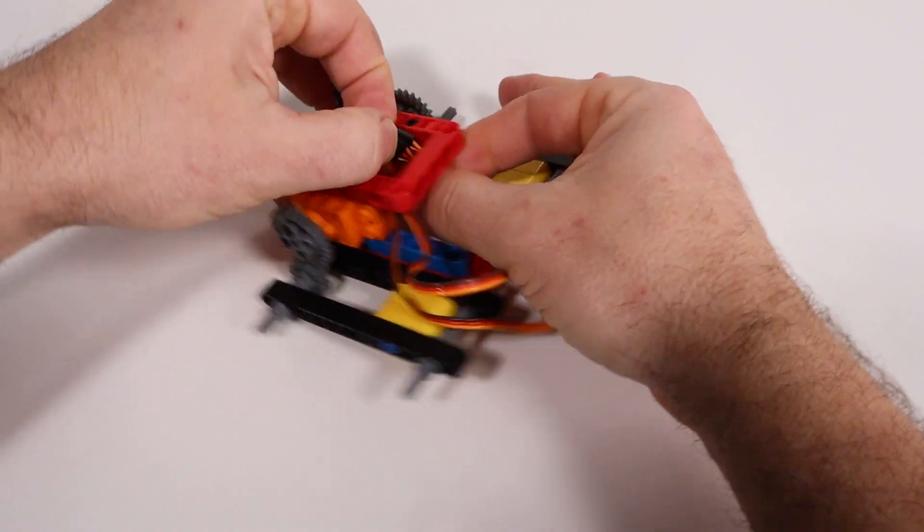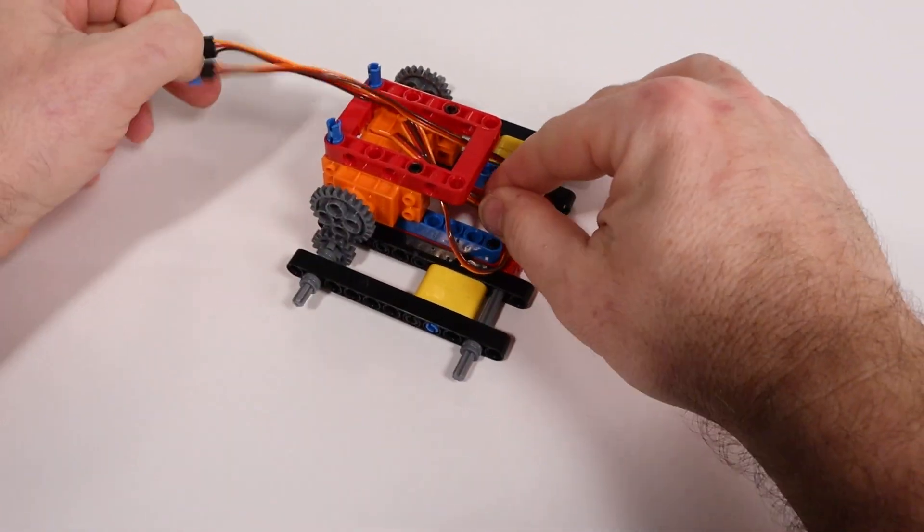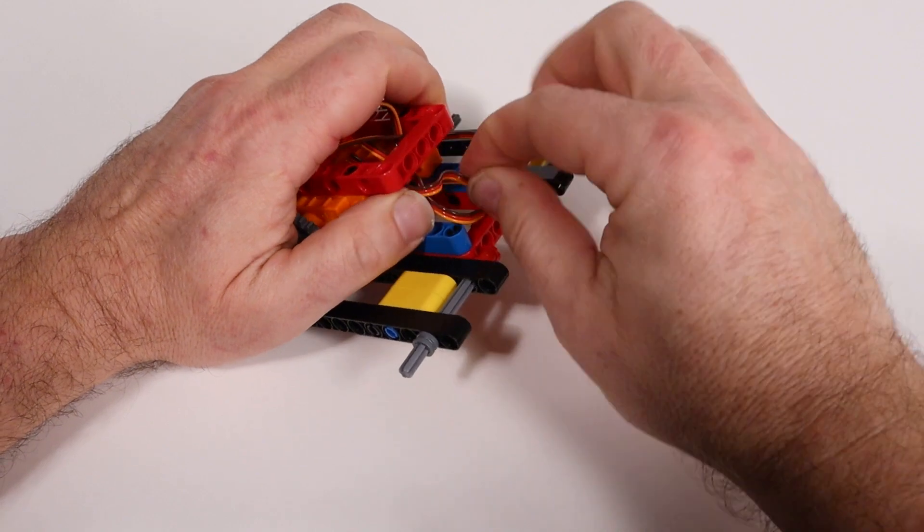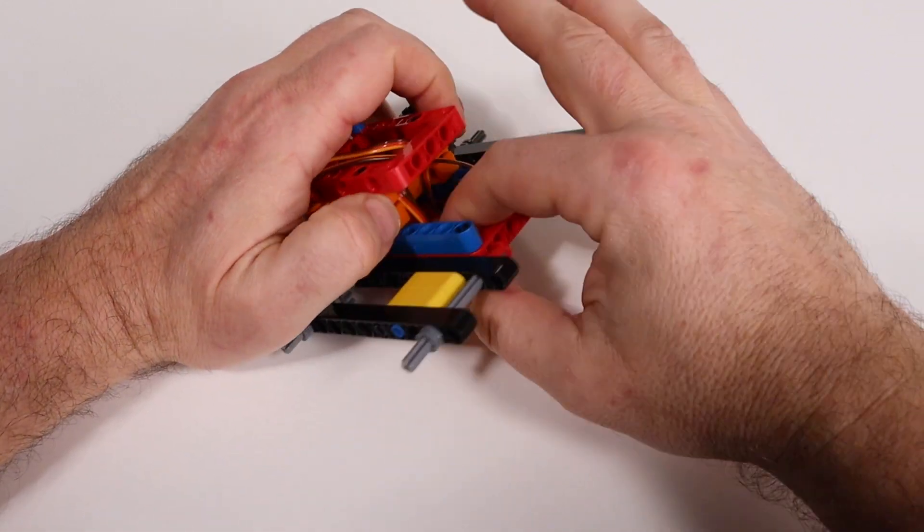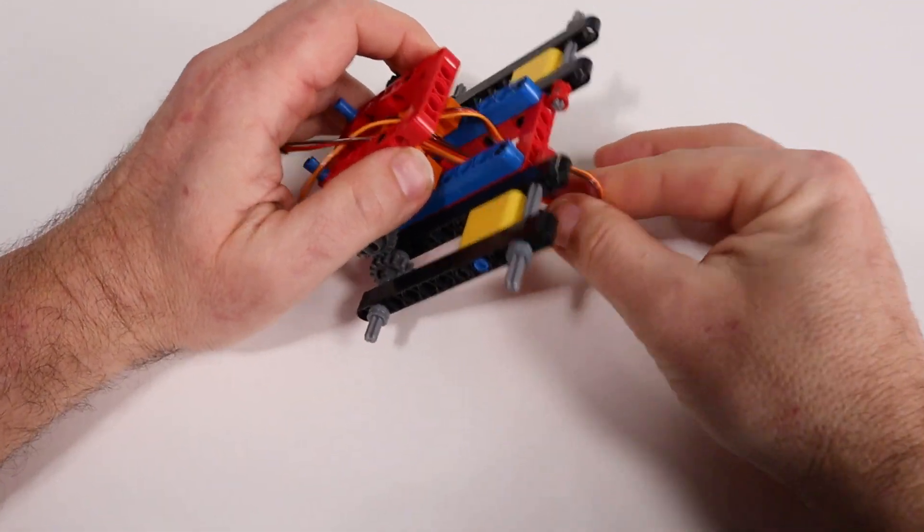Now we can do a bit of wire management. Just tuck the servo wires inside the body of the tank. We just want to keep it away from the tank treads but have the ends available to plug into the bitboard.